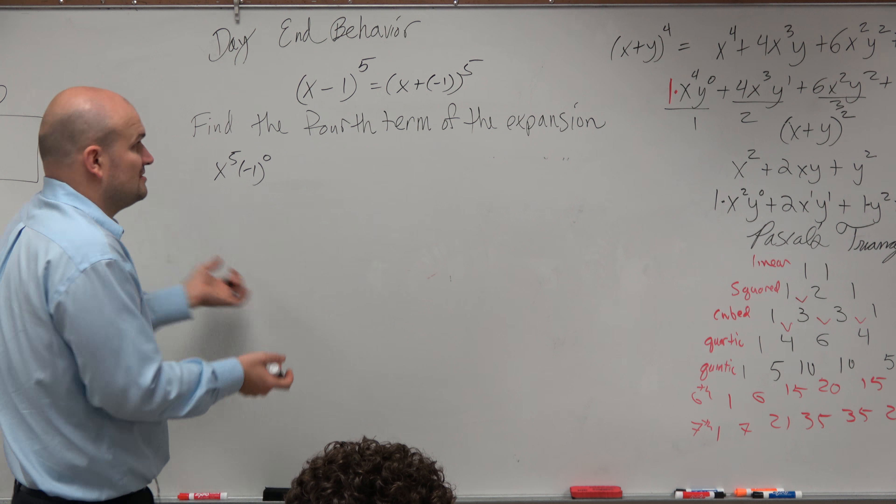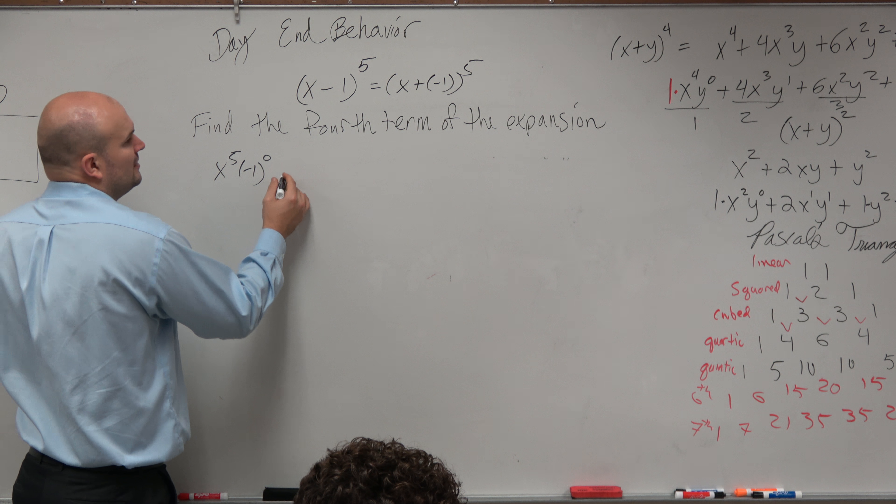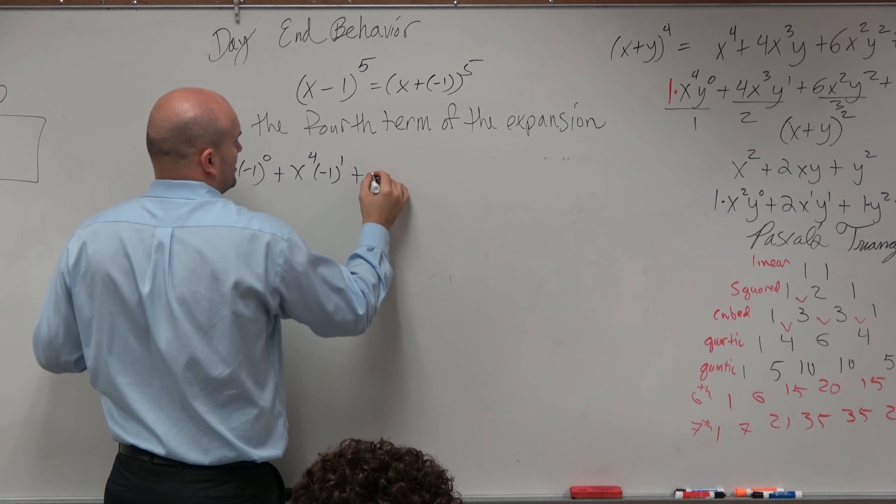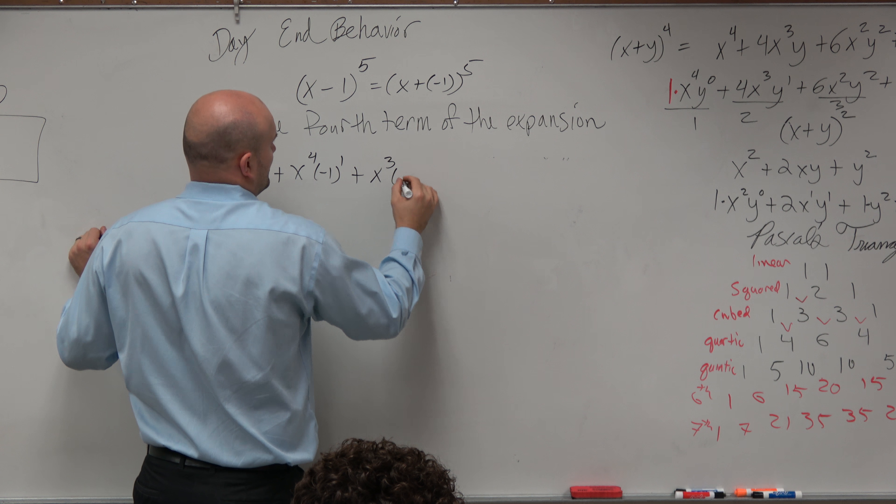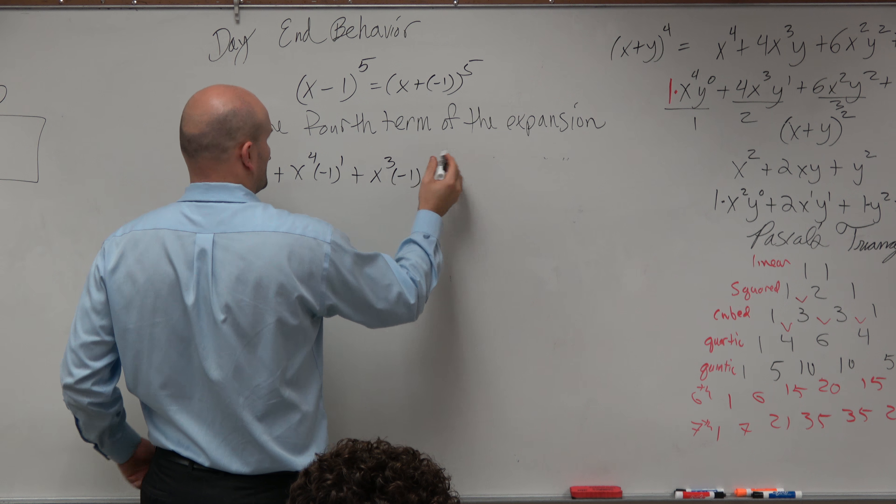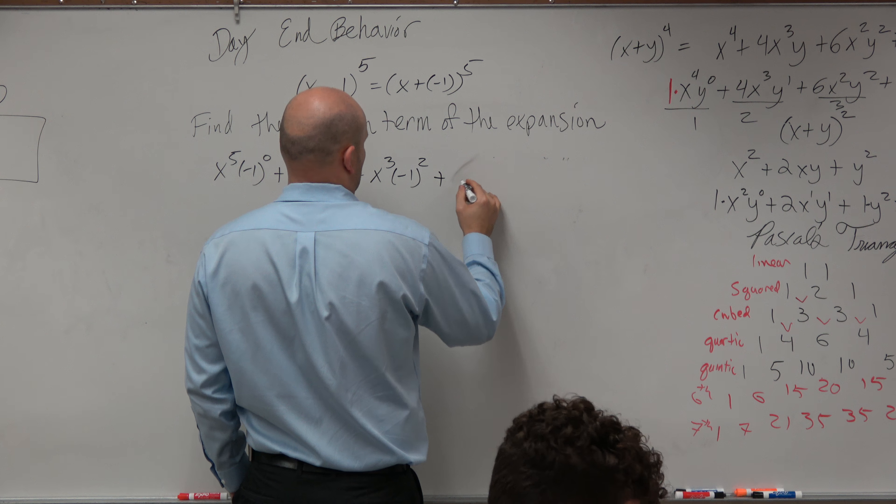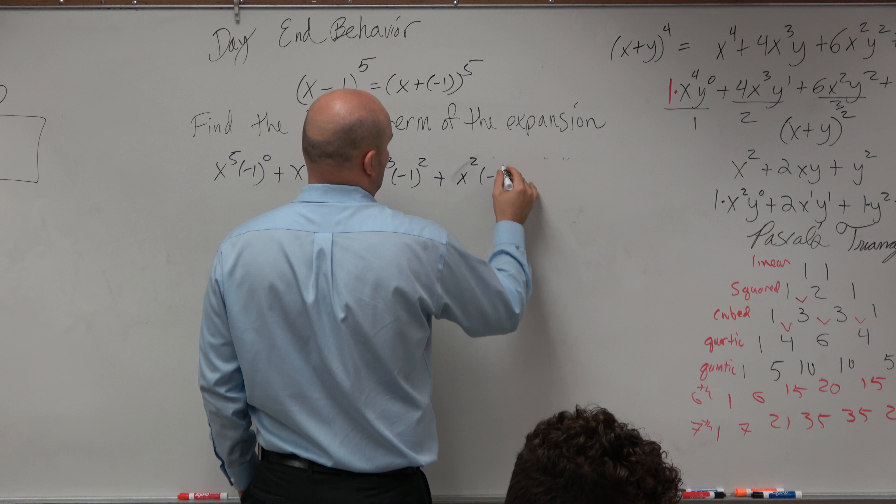I mean, you guys noticed it was the same pattern. So therefore this is going to be plus x to the fourth, negative 1 to the first, plus x to the third, negative 1 to the second, plus x squared, times negative 1 to the third.